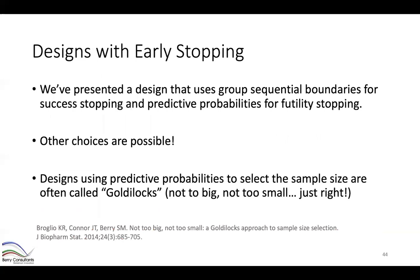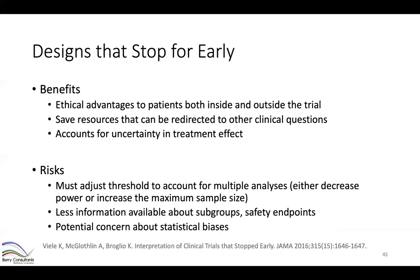The design presented uses a hybrid approach — group sequential boundaries for success stopping and predictive probabilities for futility stopping. Other choices are possible: group sequential designs with both success and futility stopping based on p-values, or designs where both are based on predictive probabilities, typically called a Goldilocks design — the idea being to get a design that's not too big and not too small, but just right.